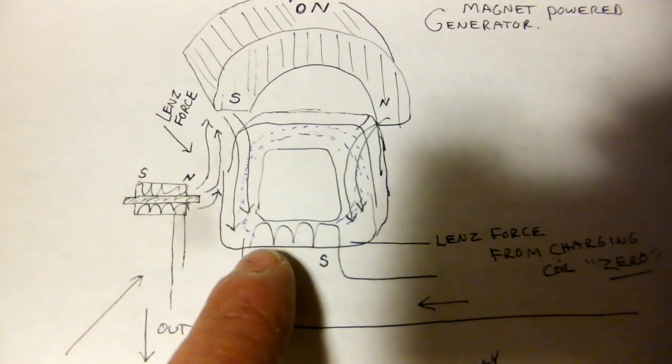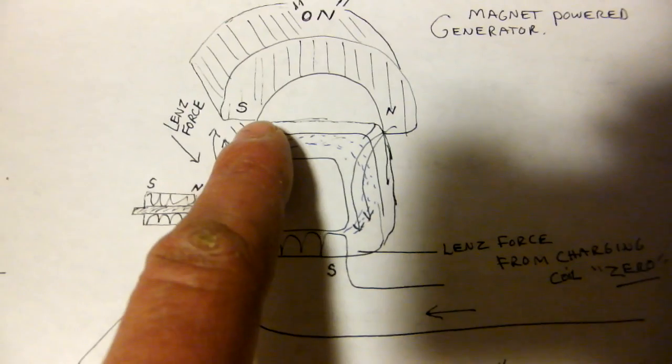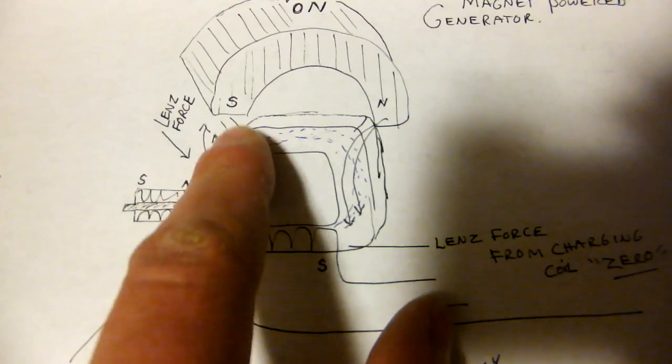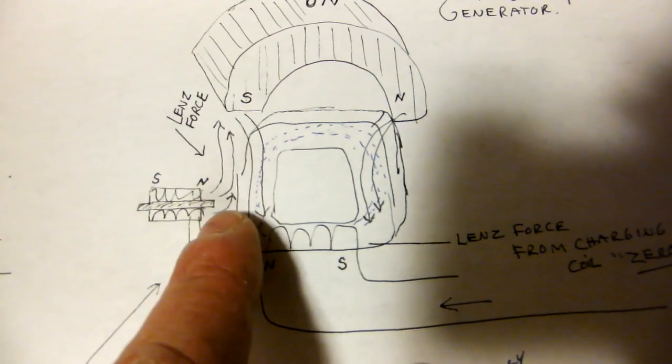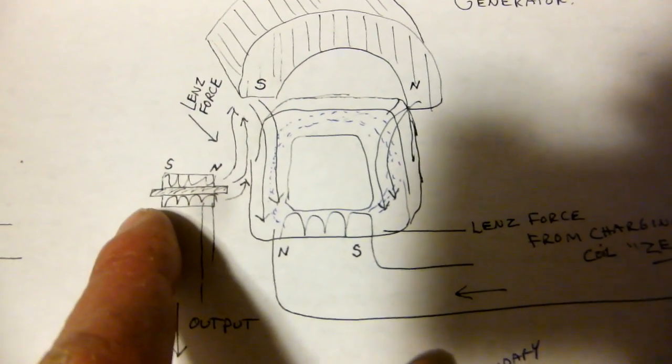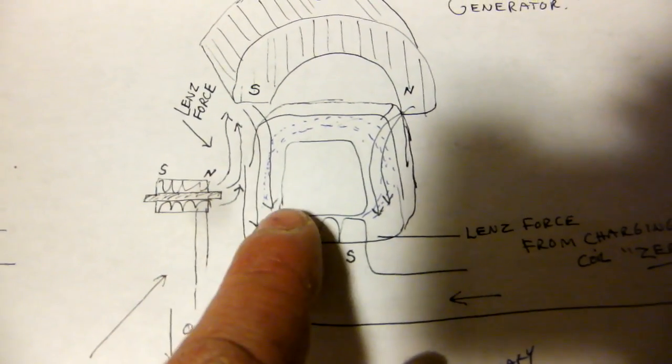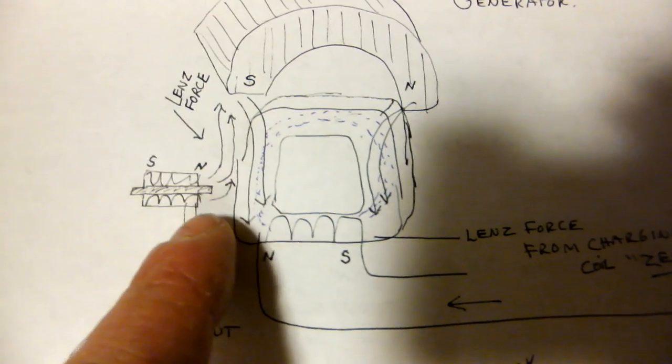When you create a north field here, it is attracted to the south field. This lines up the iron and tightens up the magnetic field, thereby releasing the socket which cannot stick to the transformer core anymore.